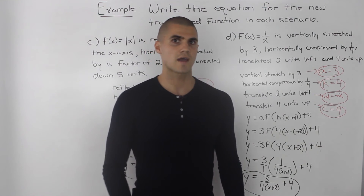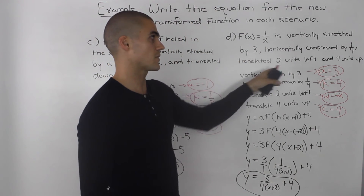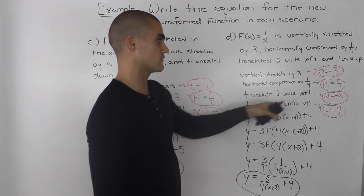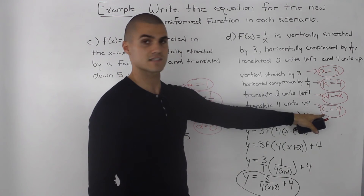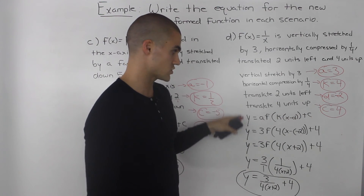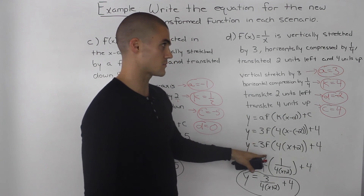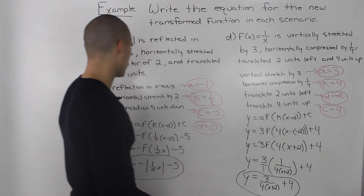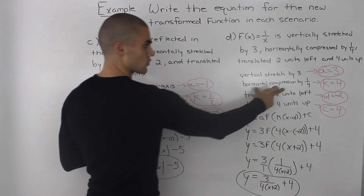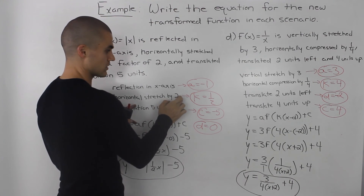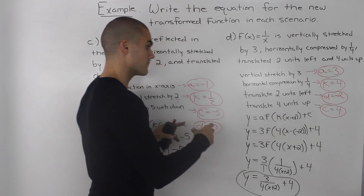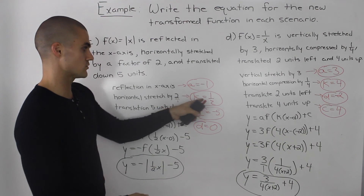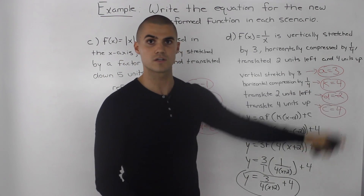As a recap: when you're given transformations written in words, write each one out separately, list them, and figure out the values for a, k, d, and c. Then plug those values into the general transformation formula and apply it to your parent function. The biggest thing to look out for is horizontal stretches or compressions — when they give you the factor, the k value is always the reciprocal of that factor. So a factor of 2 gives k equals 1 half, and a factor of 1 over 4 gives k equals 4.